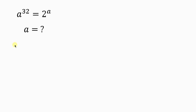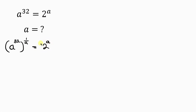Our first step will be to separate the variables — making a be on one side and the constant term on the other side. We'll do this by multiplying the exponents by 1 over a. So on the left hand side we have a to the 32 multiplied by 1 over a, and on the right hand side we have 2 to the a multiplied by 1 over a. Remember, whatever you do to the left you also do to the right.